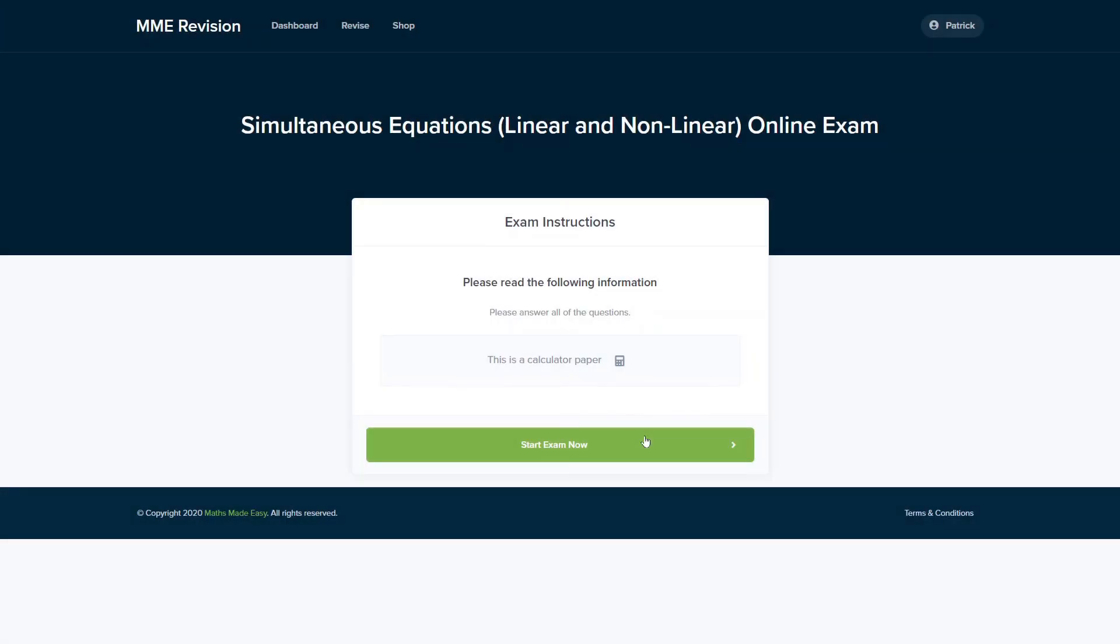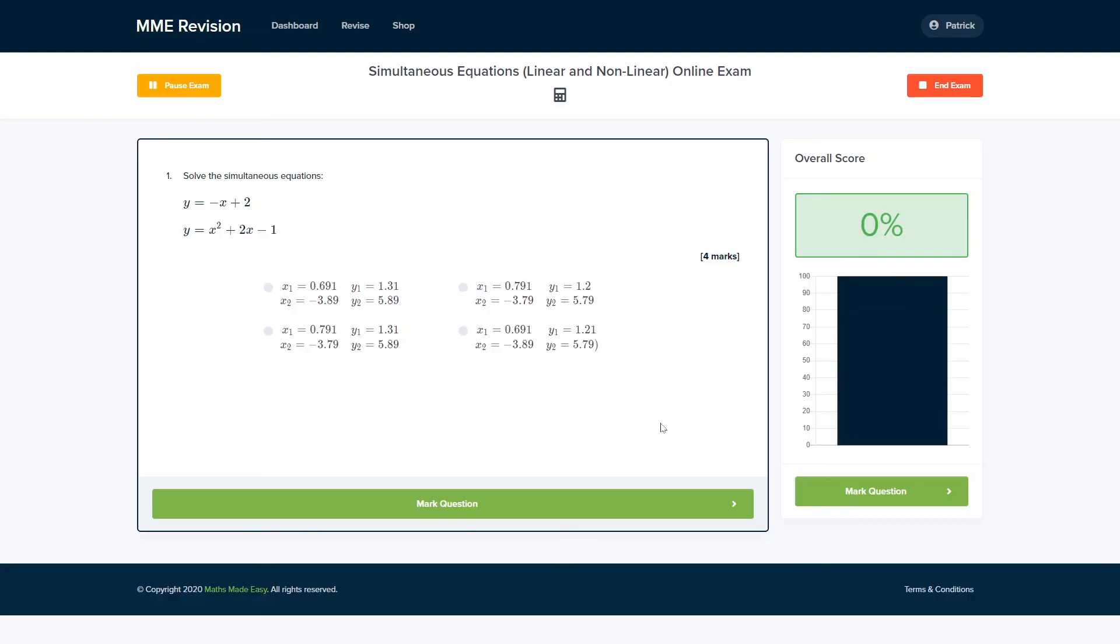If you're feeling strong on simultaneous equations, why not take our online exam? This is available through our revision platform. If you take the test, you'll find loads of different questions to have a go at, all of which you'll receive instant feedback on, allowing you to keep track of where you're going wrong and how you can improve in time for your actual exam. If this is something you're interested in, click the link below and it will take you straight over there.